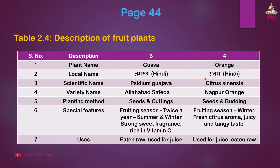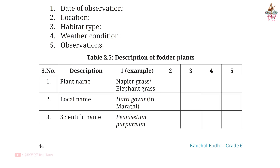Fourth fruit plant: Orange. Local name: Santra in Hindi. Scientific name: Citrus sinensis. Variety: Nagpur Orange. Planting method: Seeds and budding. Special features: Fruiting season is winter; fresh citrus aroma; juicy and tangy taste. Uses: Used for juice and eaten raw. Page 44, Table 2.5: Description of fodder plants.